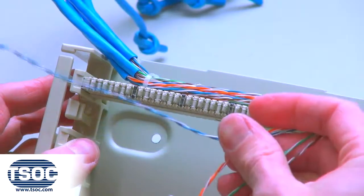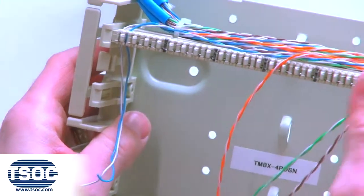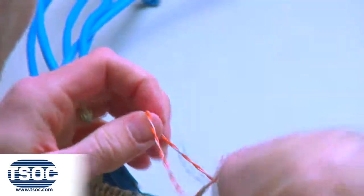Step 5: Separate each pair of the UTP cable and lace into the distribution connector according to the required wiring code.